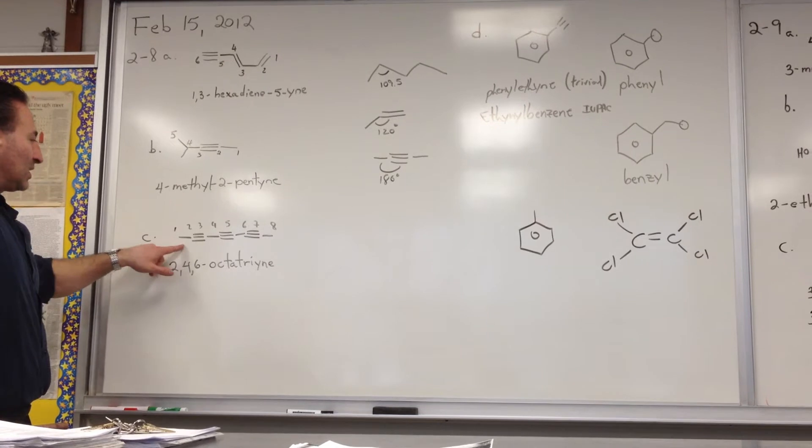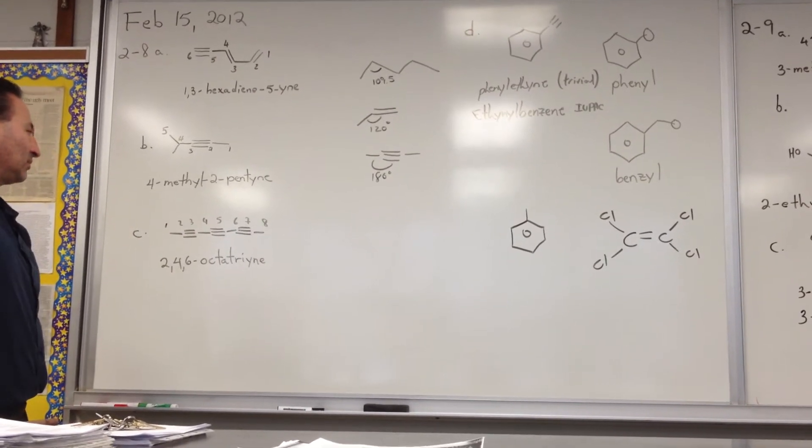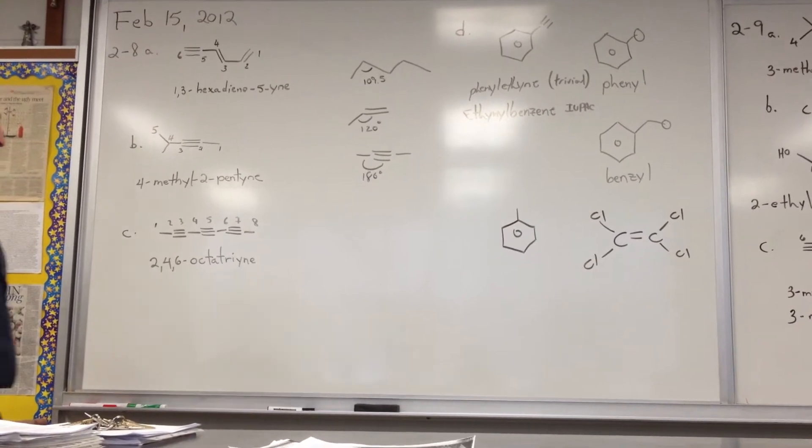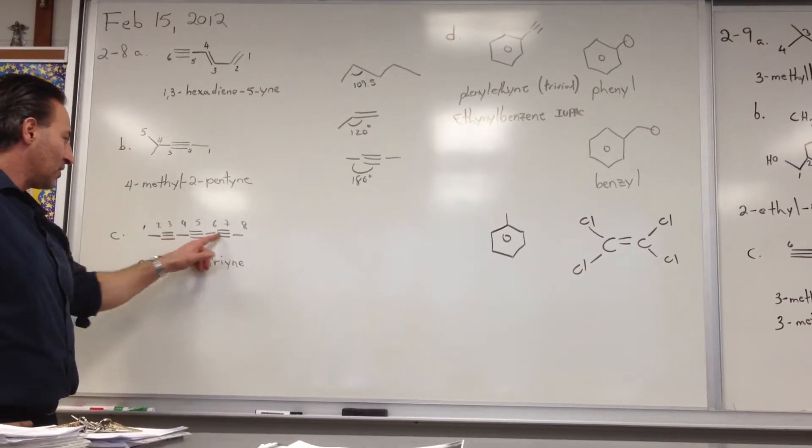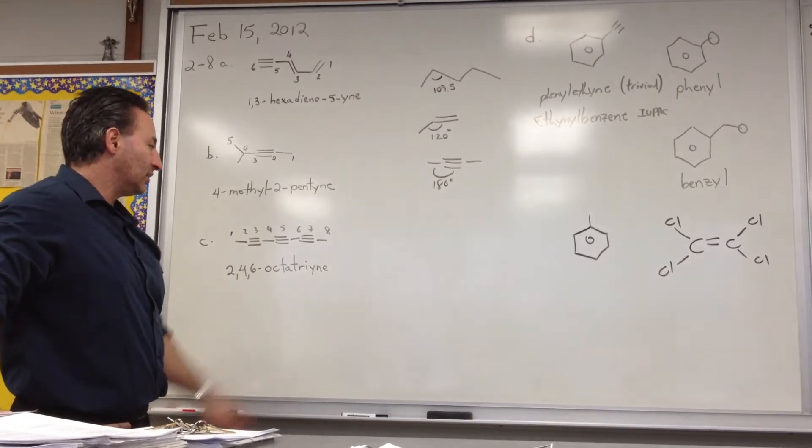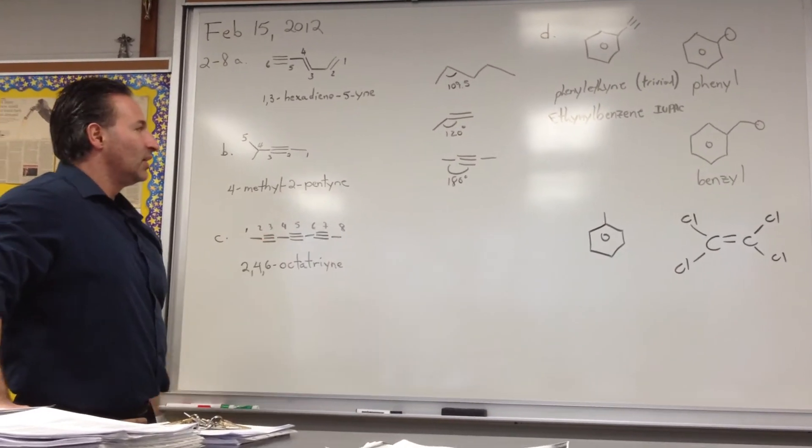This molecule has 8 carbon atoms in it, it's a conjugated alkyne with a triple bond at the second, the fourth, and the sixth position, so we call it 2,4,6-octatriyne, tri meaning there's 3 triple bonds.